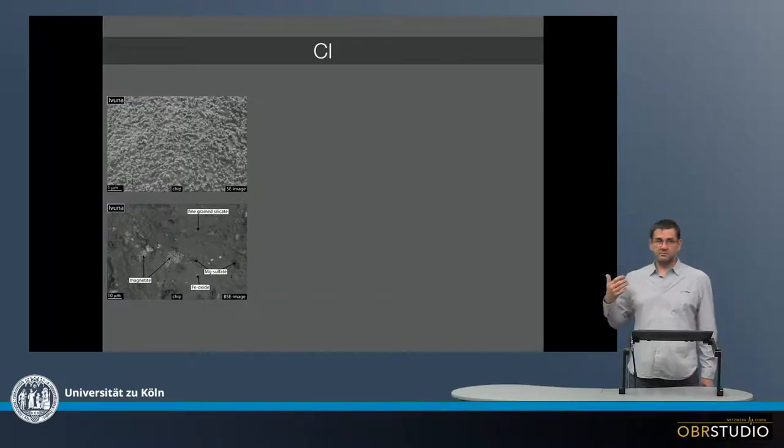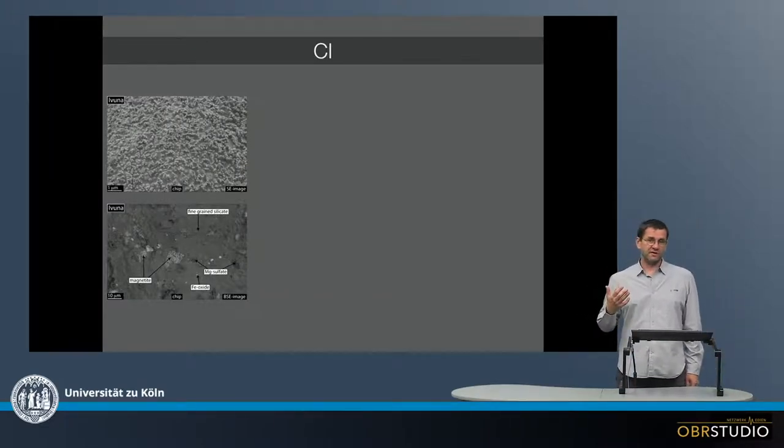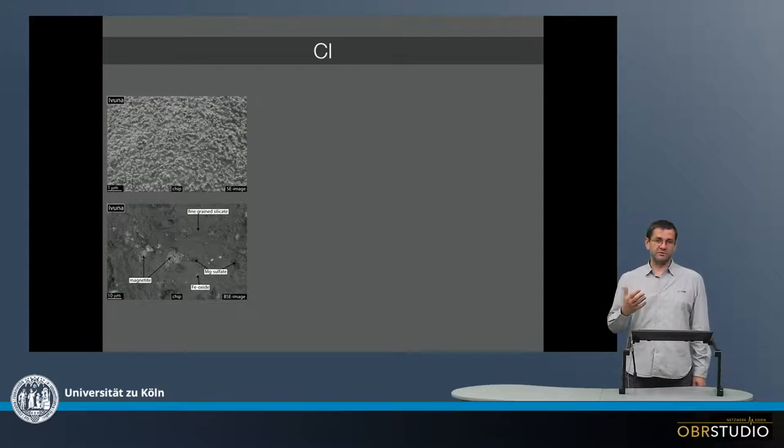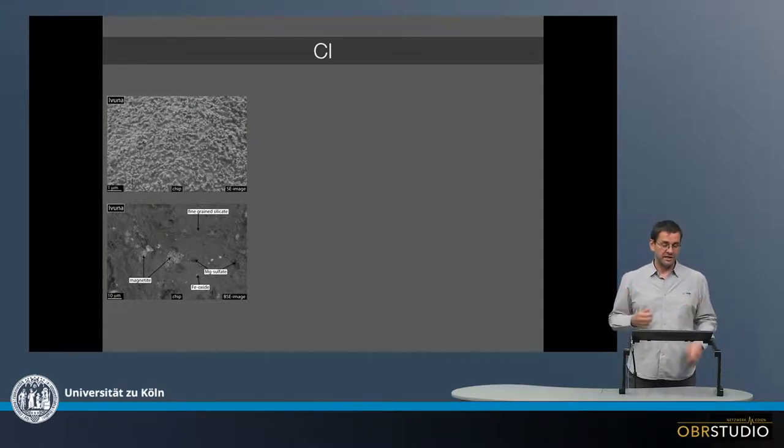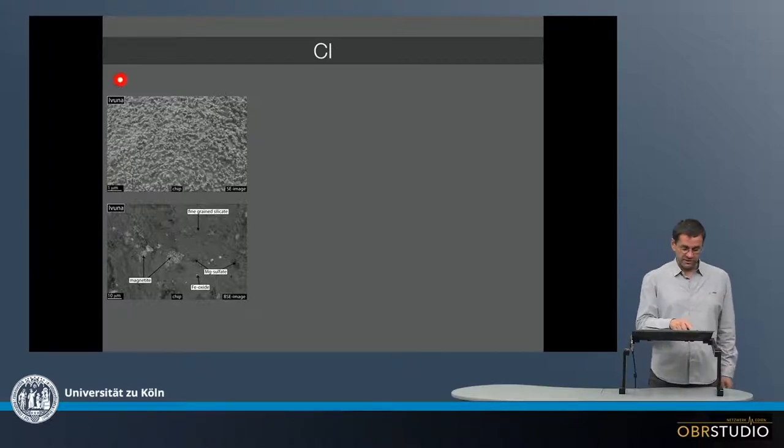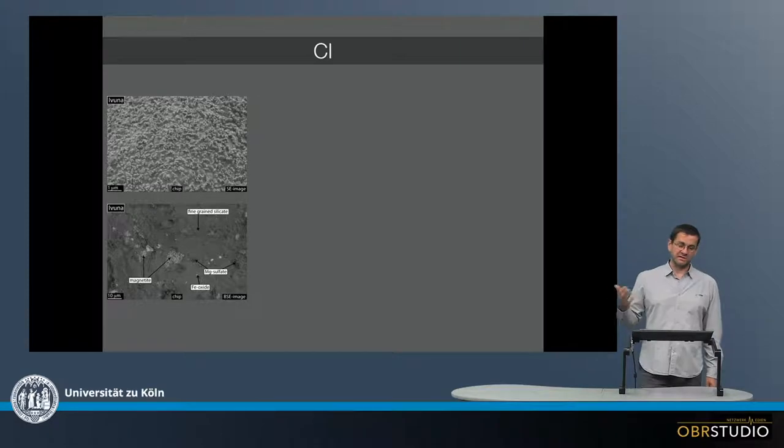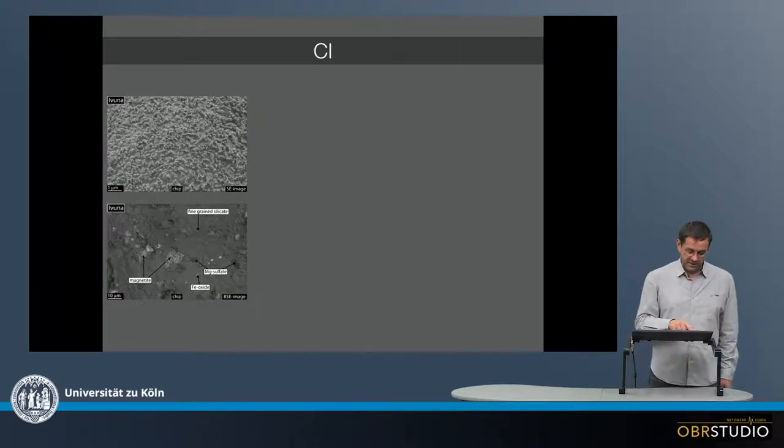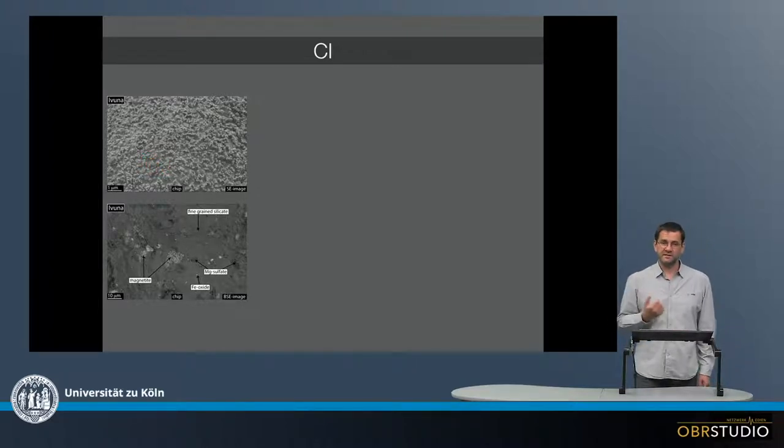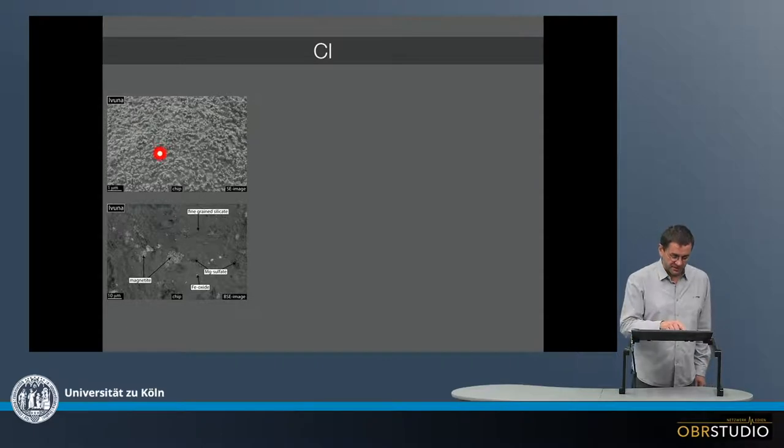Now the first chondrite to show here is a CI chondrite, and when we look at a CI chondrite, we basically only look at matrix, because these consist to 99% out of matrix. So the first one here is Ivuna, which is a type meteorite for the CI chondrite, CI, I stands for Ivuna. This is quite high resolution, so it's one micrometer. All the individual grains or crystallites here are in the submicrometer range, and in between is some sort of maybe amorphous material.